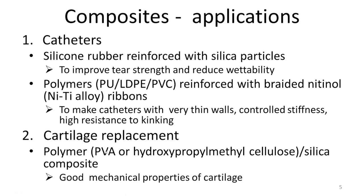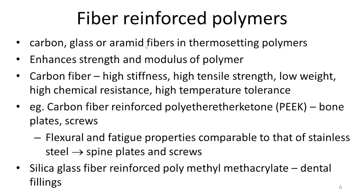For cartilage replacement, PVA or hydroxypropyl methylcellulose with silica gives very good mechanical properties. Carbon, glass, or aramid fibres in thermosetting polymers add strength and toughness. Carbon fiber specifically provides high stiffness, high tensile strength, low weight, high chemical resistance, and high temperature tolerance — which is why carbon is used quite widely.